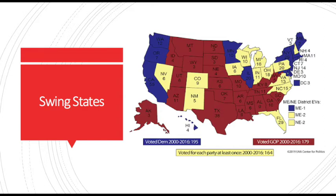A Democratic candidate, for example, wouldn't campaign as hard in Massachusetts since they pretty much know they're going to get all those electoral votes. Instead, they would focus maybe on Pennsylvania, because these battleground states, as they are sometimes called, are the most important ones to win the presidency, since they could go to either candidate. This is why voters in certain states may have more influence over the outcome of an election.